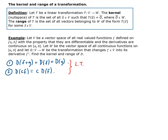Now let's find the kernel of D. The derivative function takes the set of functions from V to W. The kernel of D will be the functions that get mapped to zero — in this case, it's the set of constants, because when you take the derivative of a constant, that gives you zero. For example, the derivative of negative five with respect to X gives you zero. So the kernel of D is the set of constants defined on [A, B].